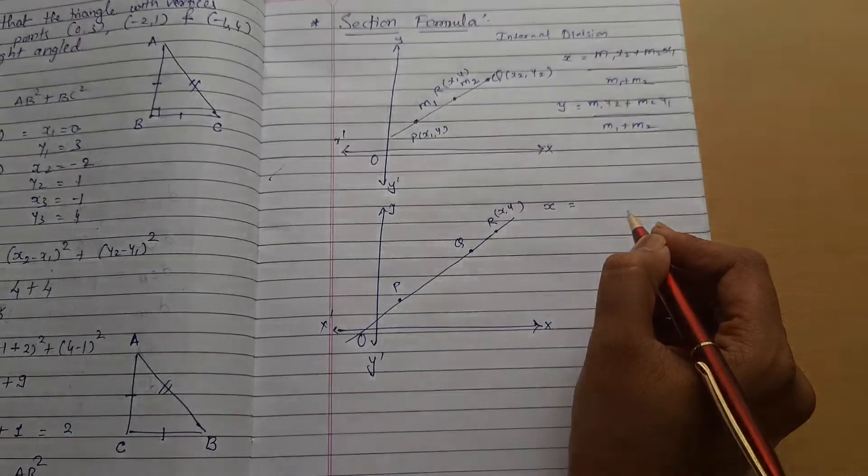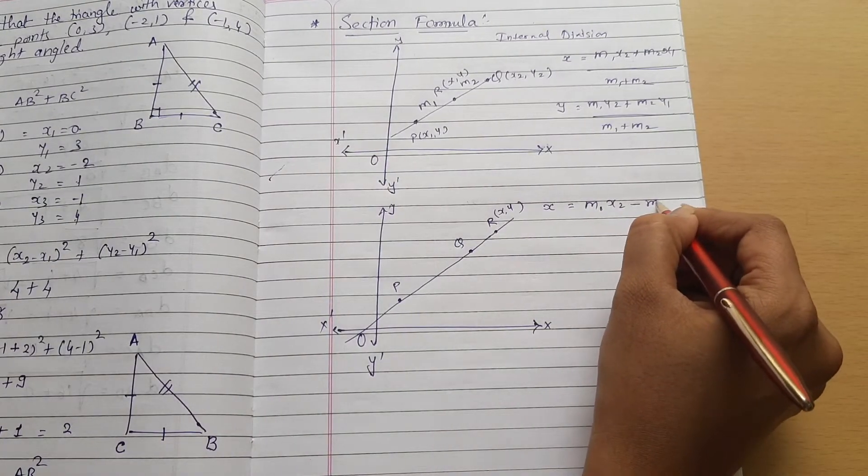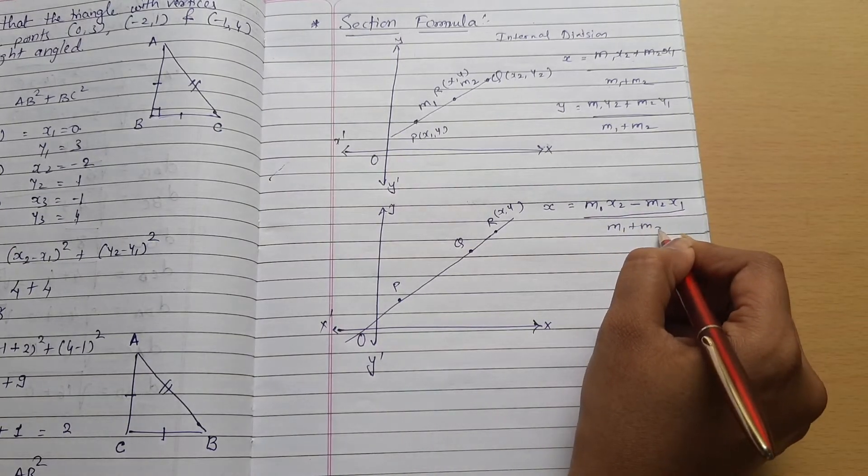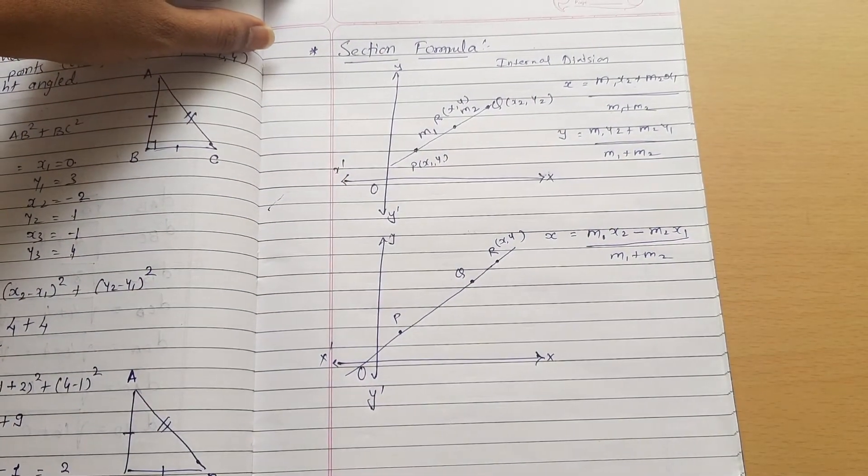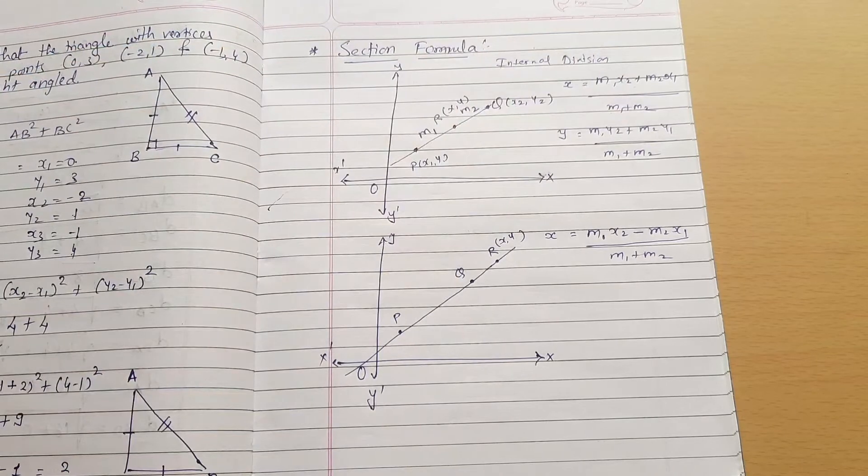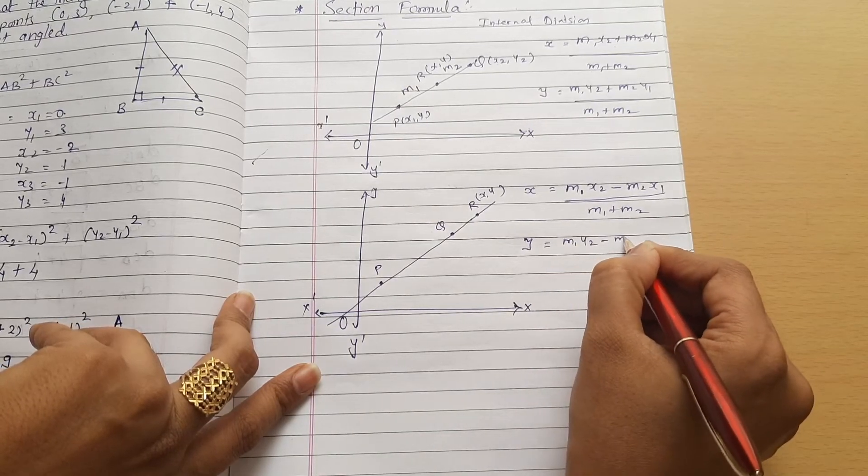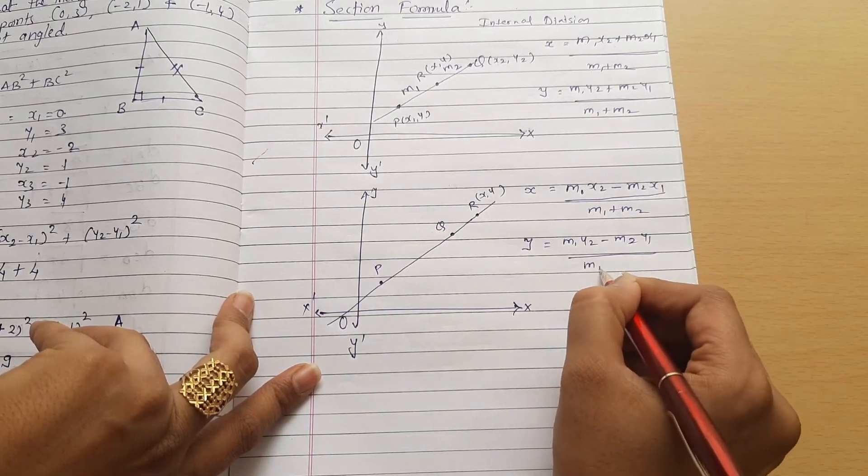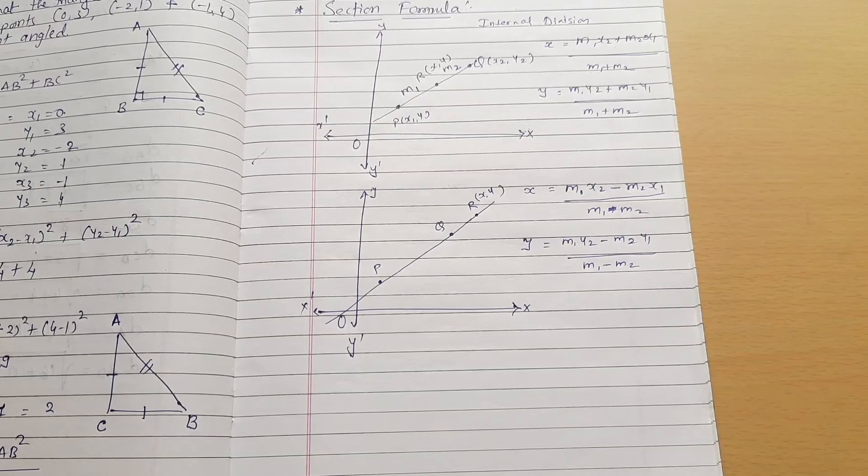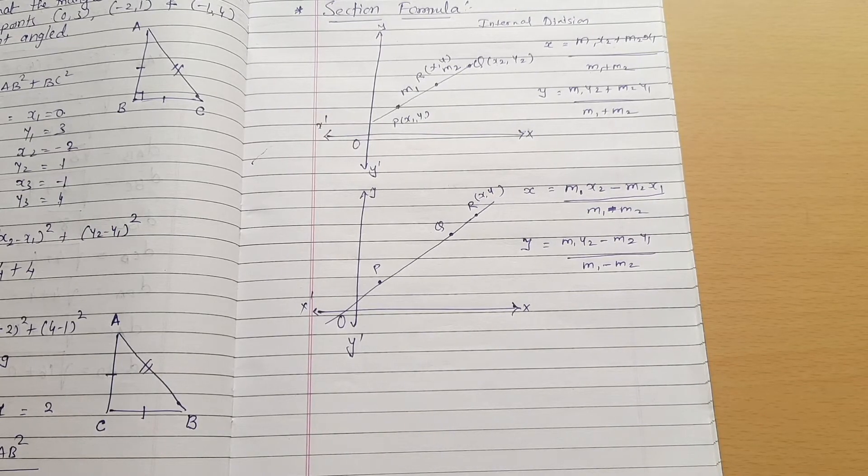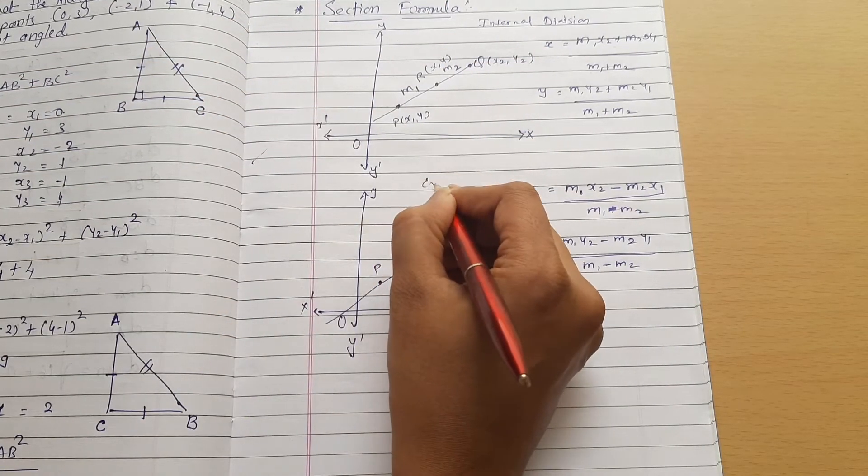For external division, x coordinate is equal to m1 x2 minus m2 x1 divided by m1 minus m2. This is the difference between the two equations. If the point divides the line internally, it's plus. If it divides externally, it's minus. Same for y: y equals m1 y2 minus m2 y1 divided by m1 minus m2. In both numerator and denominator we have minus, while in internal division both have plus.